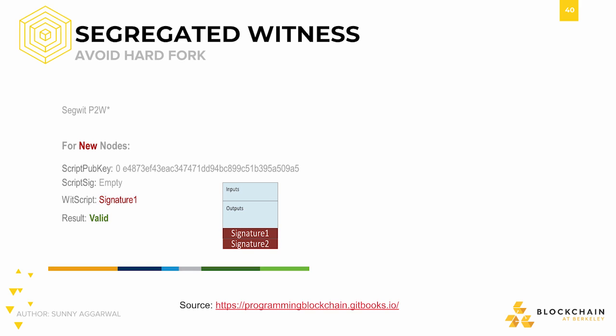In the diagram on the left, you can see that the signatures are located at the end of the transaction rather than in the input script — the script pub key. New nodes would see the new script pub keys that don't contain signatures and know to look instead in the segregated witness for the signatures. Assuming the signatures are valid, the transaction is valid.